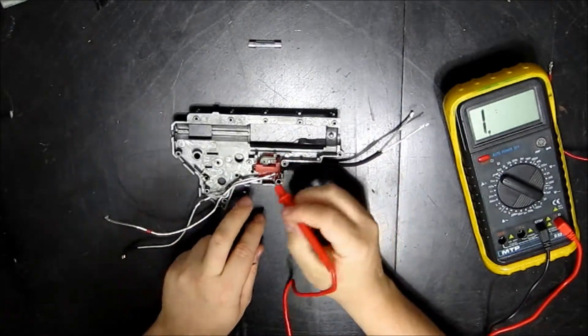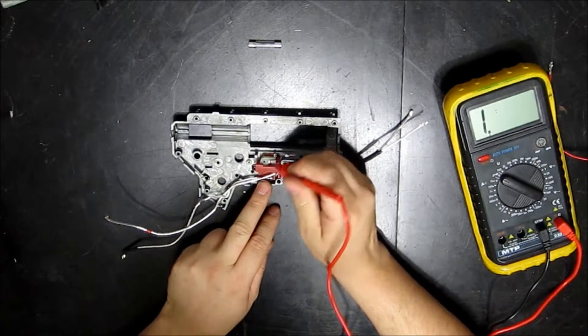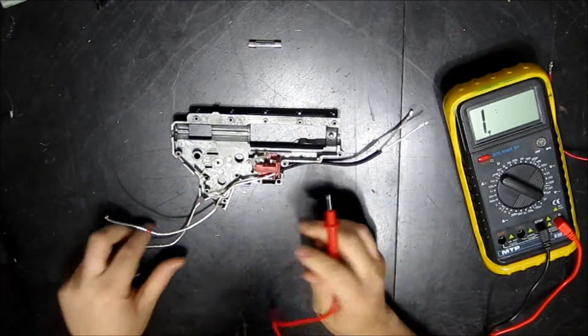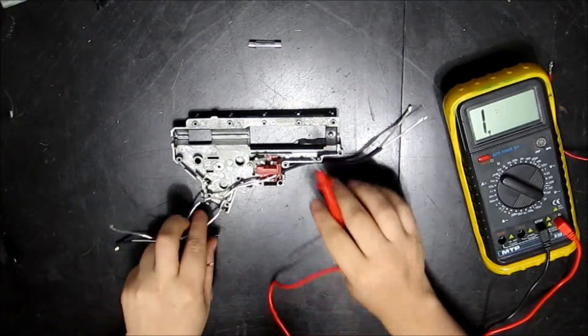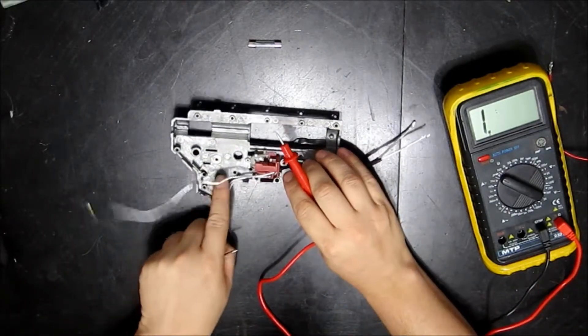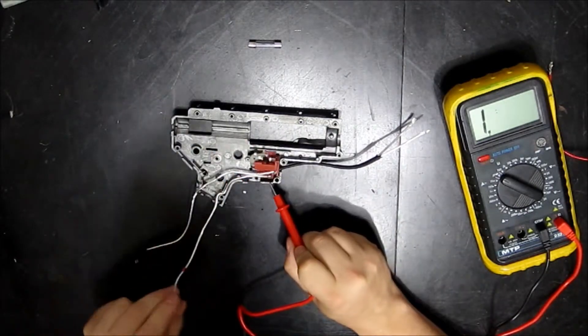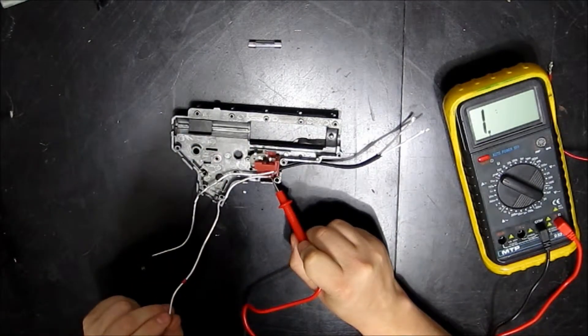Now, let's say you're doing this and you know you have good contact. Well, on the positive side, it's broken into two different wires. As you can see here, on the trigger, if I follow this.